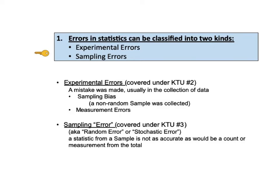Let's now take a closer look at each key to understanding. KTU number one says errors in statistics can be classified into two kinds: experimental errors and sampling errors. Experimental errors are due to a mistake that has been made, usually in the collection of data. One kind is sampling bias, where the error is in not collecting a random sample. The second kind is measurement error.